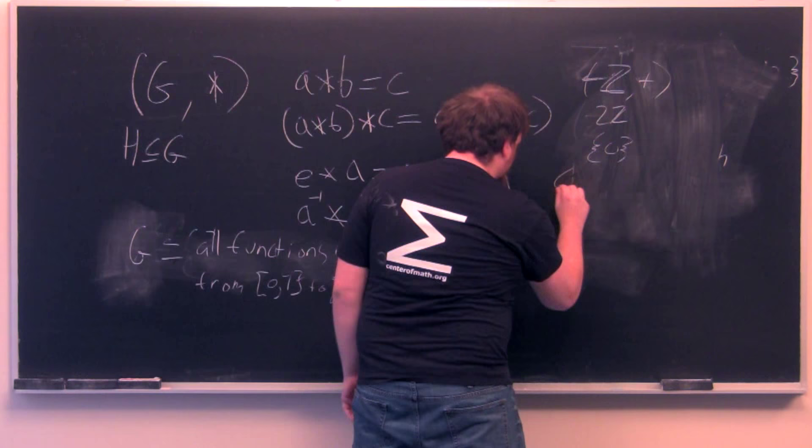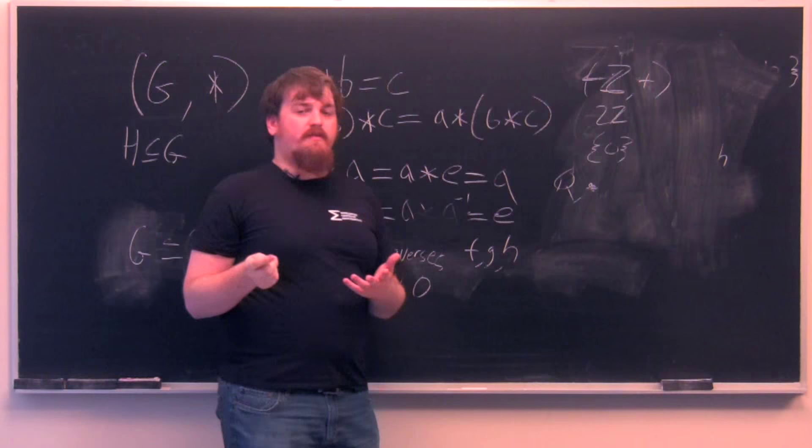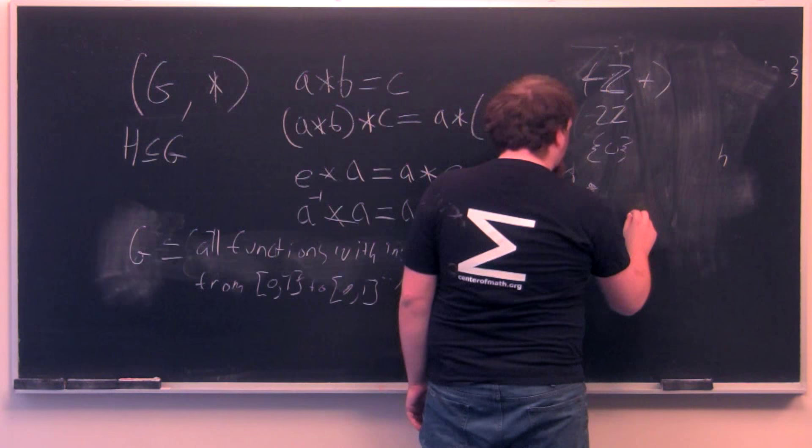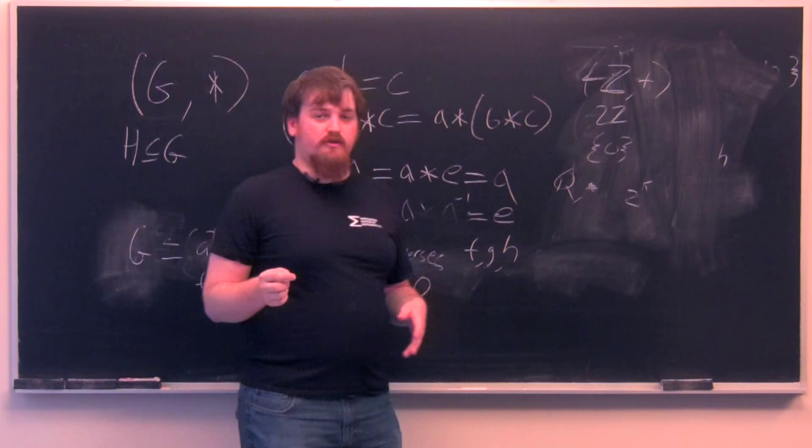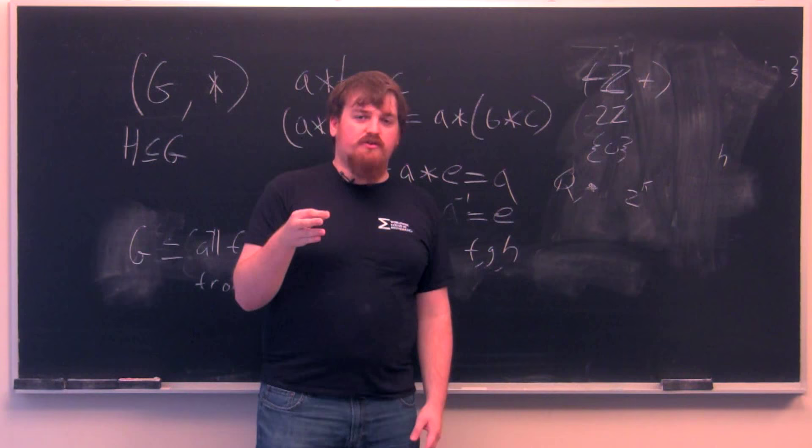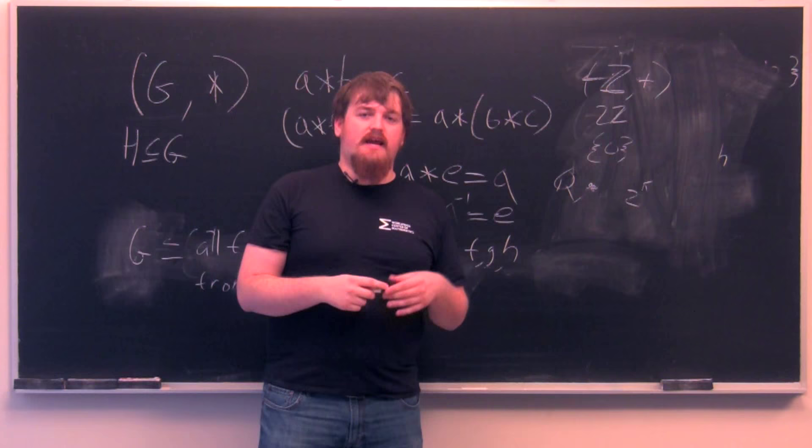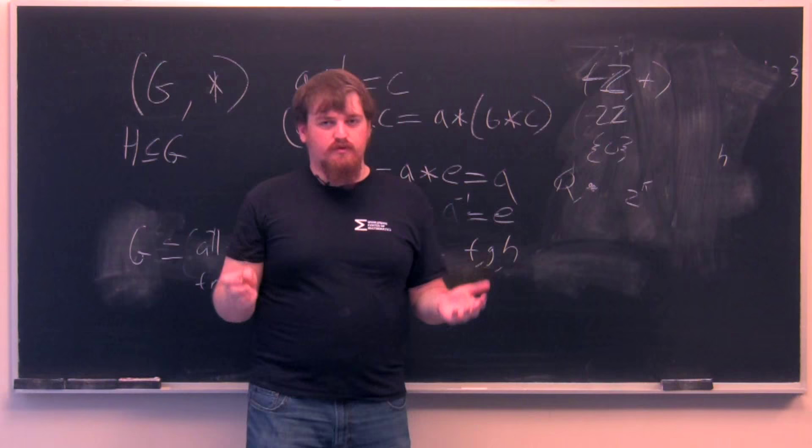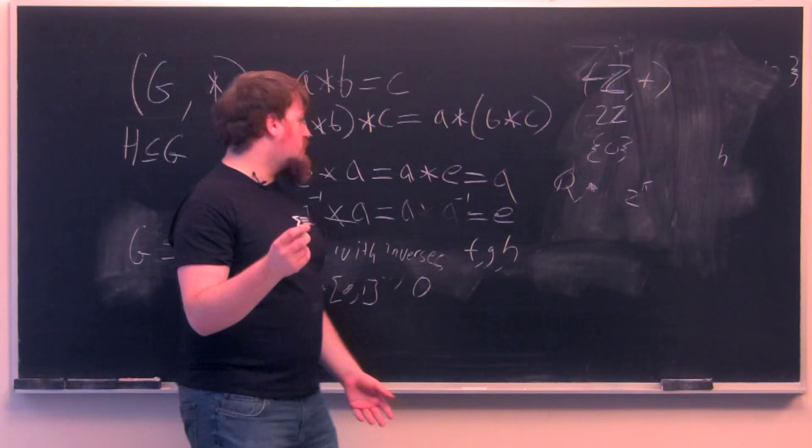If we're talking about Q under multiplication, then a subgroup of this could be all the powers of 2. So, those are things to the form 2 to the K, where K is an integer. So, that would be like 2, 4, 8, 16, but also things to the form 1/2, 1/8, 1/16, because any power of 2 times another power of 2 has to be yet another power of 2, because it only has 2 in its prime factorization.